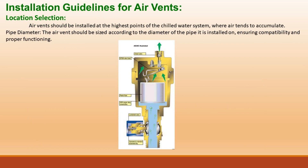Installation guidelines for air vents. Location selection: air vents should be installed at the highest points of the chilled water system, where air tends to accumulate. Pipe diameter: the air vent should be sized according to the diameter of the pipe it is installed on, ensuring compatibility and proper functioning.